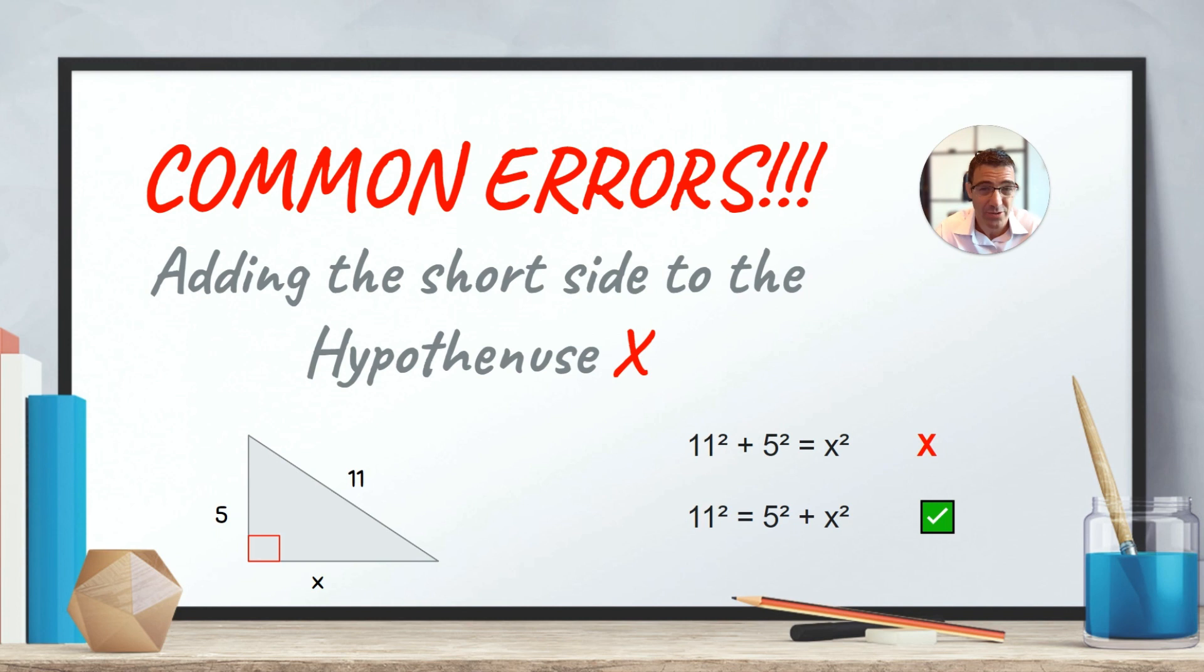Now, there are some very common errors with Pythagoras' theorem, and we're going to try and stay away from those. There are two common errors which I see all the time with students, and we're going to try our best to not do these. The first common error, which is very classic, is to add the short side to the hypotenuse. So you'll see a triangle like the 5, 11, and X triangle. So we're looking for the short length there, X. And you'll see work from a student, which would be like 11 squared plus 5 squared equals X squared. And the explanation would be, it's a squared plus b squared equals c squared. The problem is the student is not adding the shorter sides here. They're adding the 5 squared, which is a short side, to the long side, 11 squared.